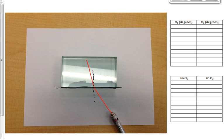You can see here now that I've got a laser beam striking the boundary where my normal line intersects. You can see that my angle of refraction, which I'm gonna label right here as theta 2, is smaller than my angle of incidence that I'm gonna label as theta 1.